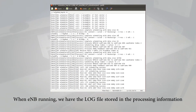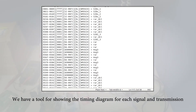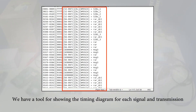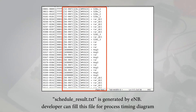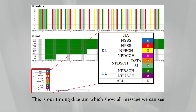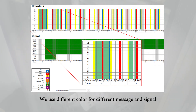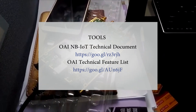When NB-IoT is running, a log file stores processing information. We have a tool for showing the timing diagram for each signal and transmission. This tool reads the log file schedule_result.txt and generates the diagram. Developers can fill this file to process the timing diagram. This is our timing diagram, which shows all messages — we use different colors for different messages and signals.